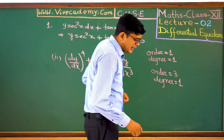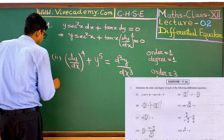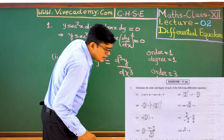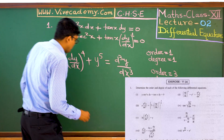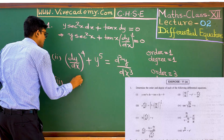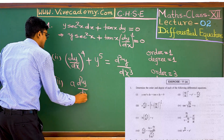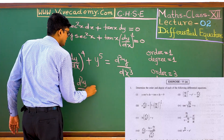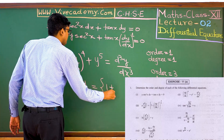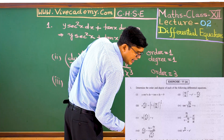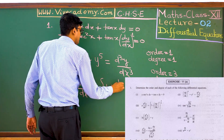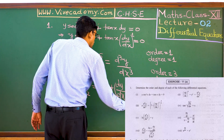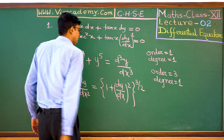Next question — question number 3: a · d²y/dx² = [1 + (dy/dx)²]^(3/2). Think about the order. The maximum number of times y has been differentiated — how many times is it?